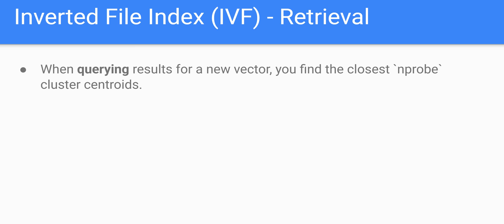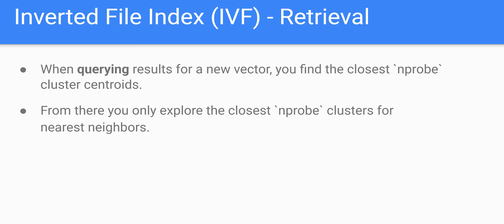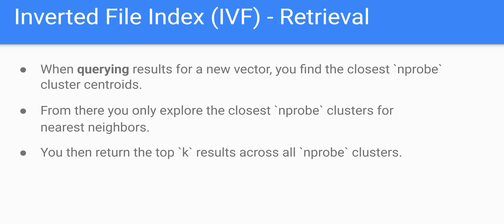If nProbe equals two, we find the two most similar cluster centroids. Then we explore those clusters — we look within each of those two clusters to find the closest vectors to our query vector. We only explore those clusters, which is what makes it so fast: we don't bother searching over all the other vectors. Once we have all results from these nProbe clusters, we return the top K most similar.